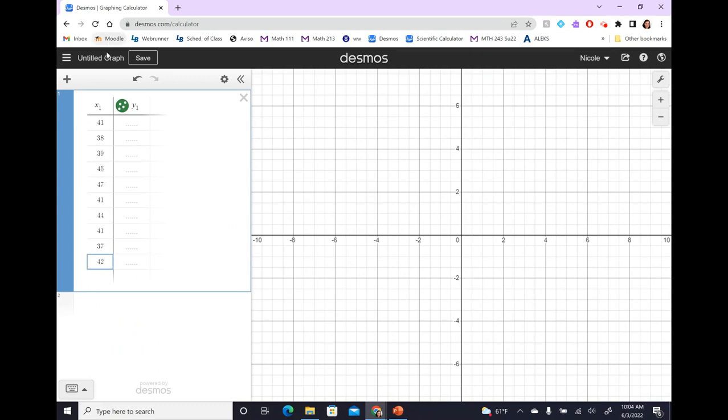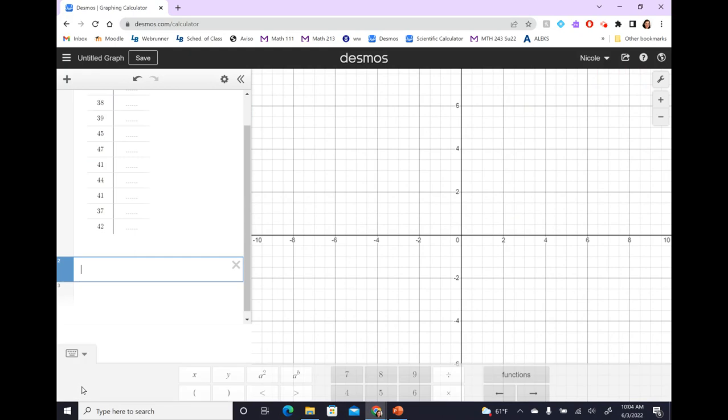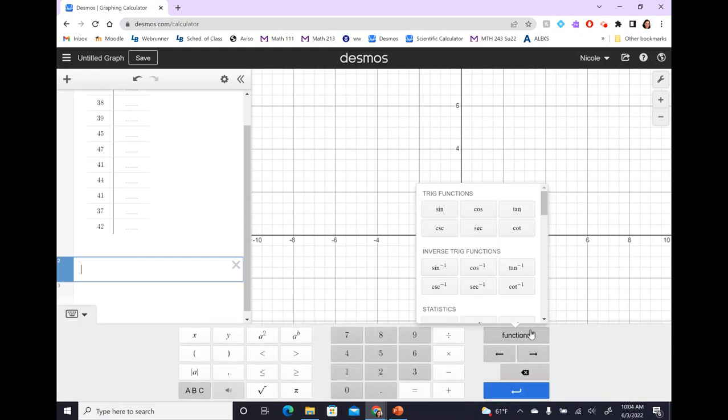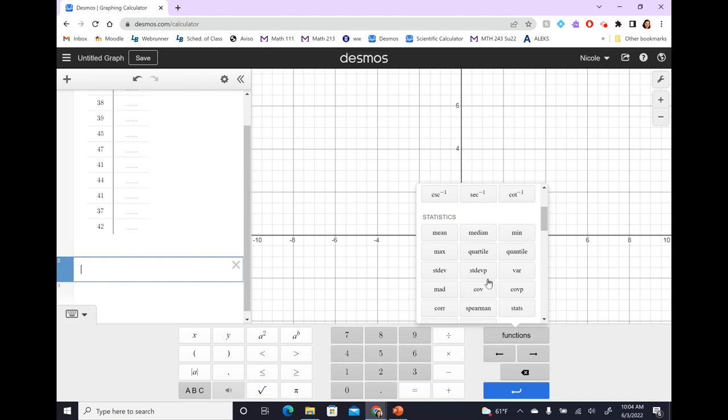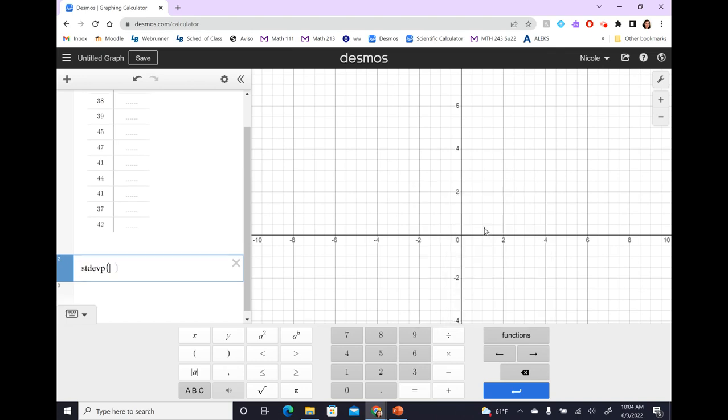All right. So we entered all our data into the X1 column of Desmos, and now let's go ahead and we're going to calculate the population variance and population standard deviation. So what you can do is go to your functions button, your keyboard buttons, and go to functions, and go to statistics. And you see there's two choices for standard deviation, and there's only one choice for variance. So there isn't a quick button for population variance, but what you can do is let's start with standard deviation, and the P stands for population. So standard deviation of a population is standard deviation P, and then we're just going to put in X1 because that's the data we're interested in.